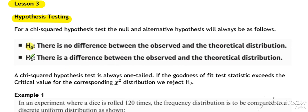We've talked about an alternative before. They're always set up in the same way. No difference between observed and expected, and there is a significant difference between observed and theoretical. It's always one-tailed. Chi-squared hypothesis tests, the alternative hypothesis is always agreed to that.